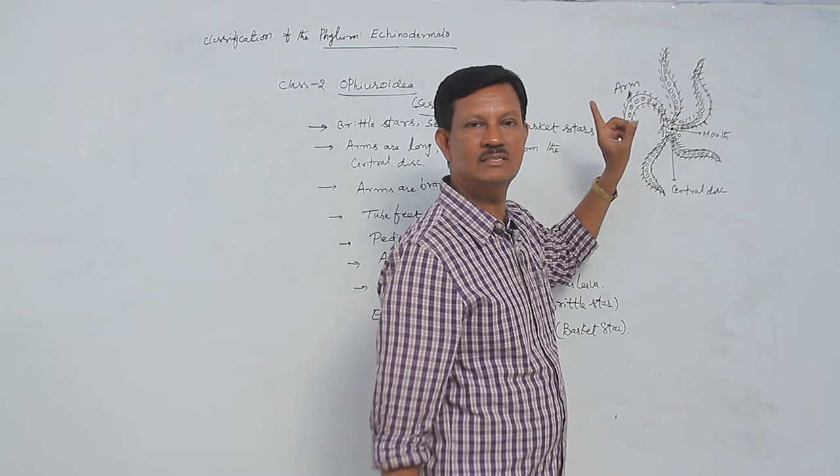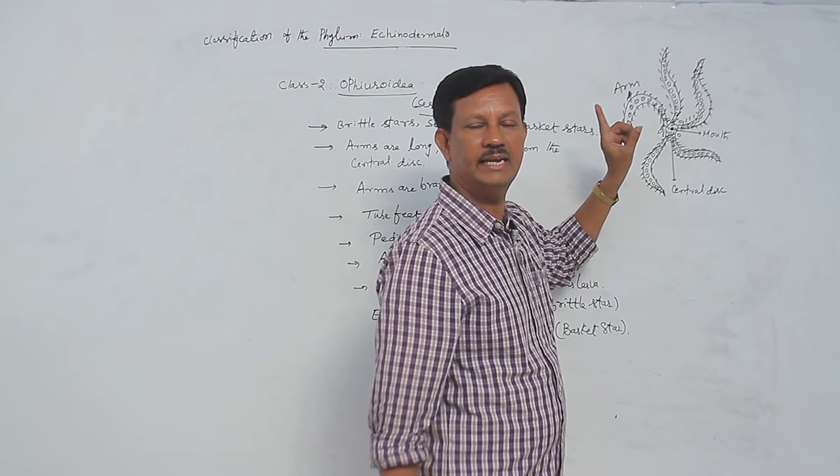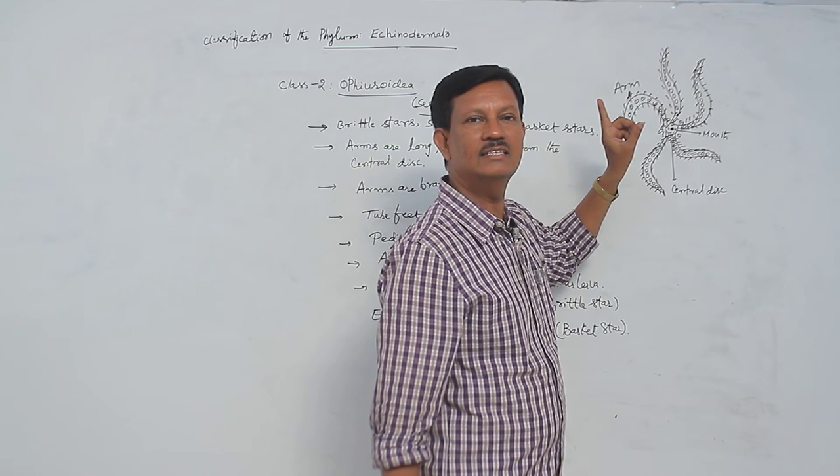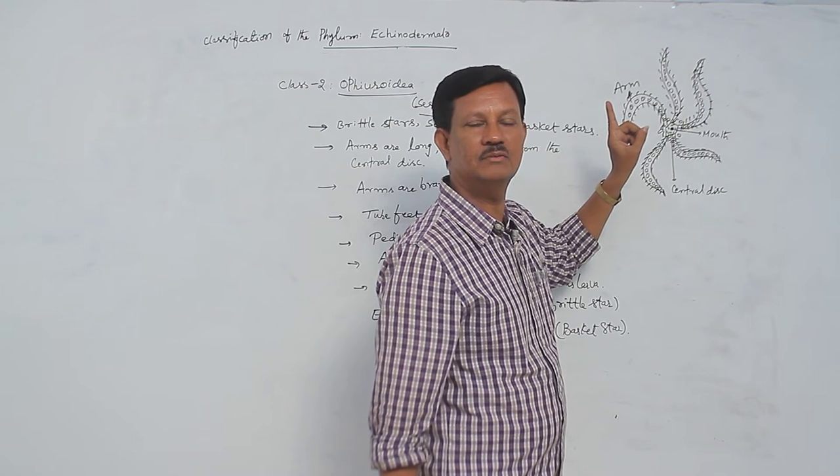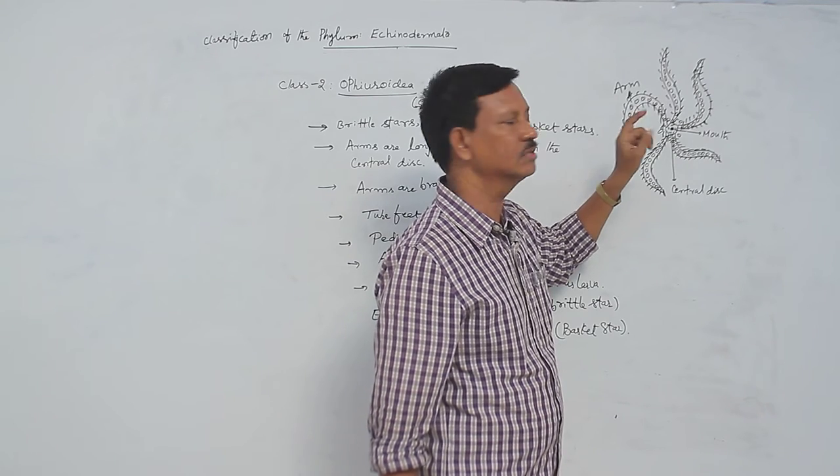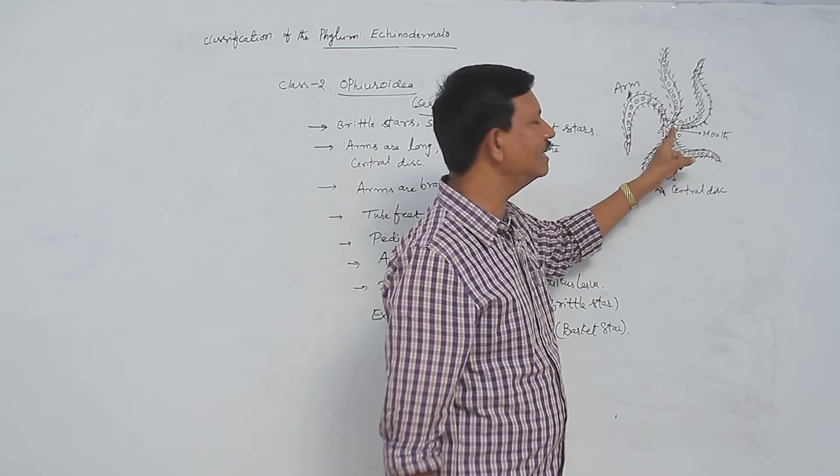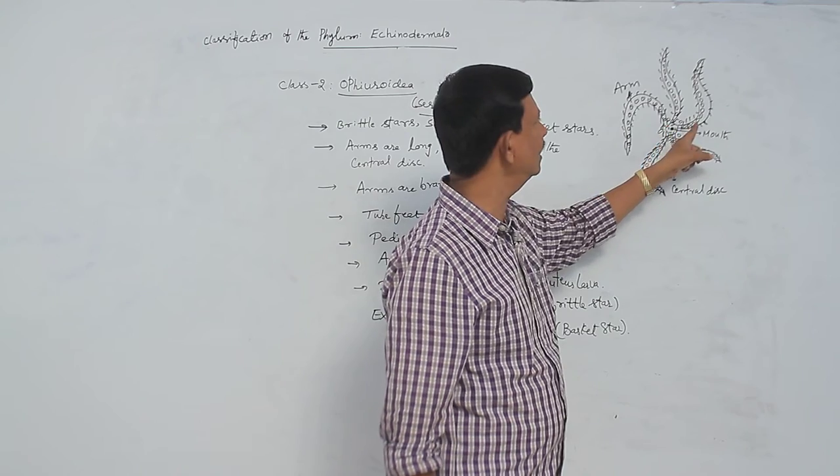Previously we have discussed starfish Asteroidea. Here there is no clear demarcation between the central disc and arms. But here there is a clear demarcation between the central disc and arms.